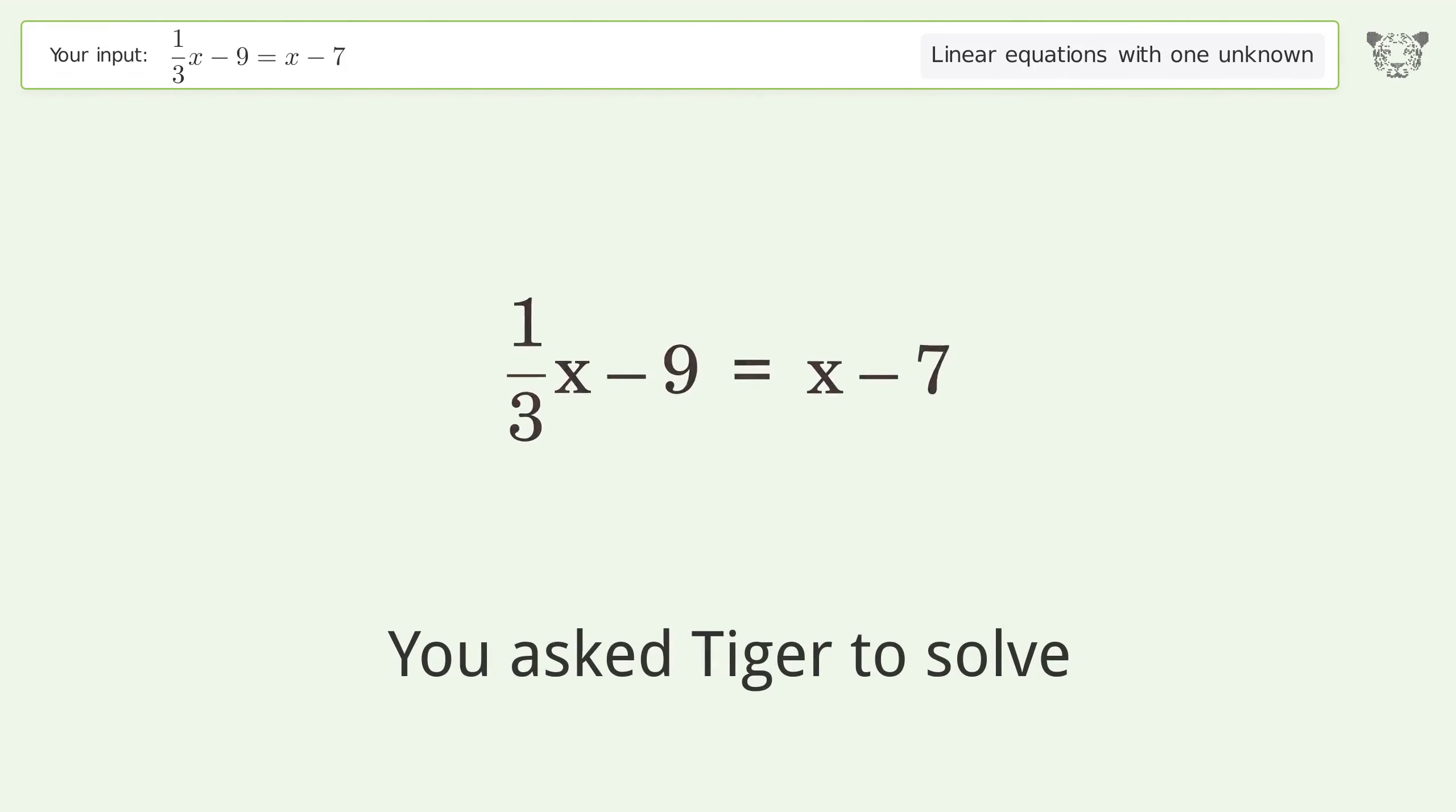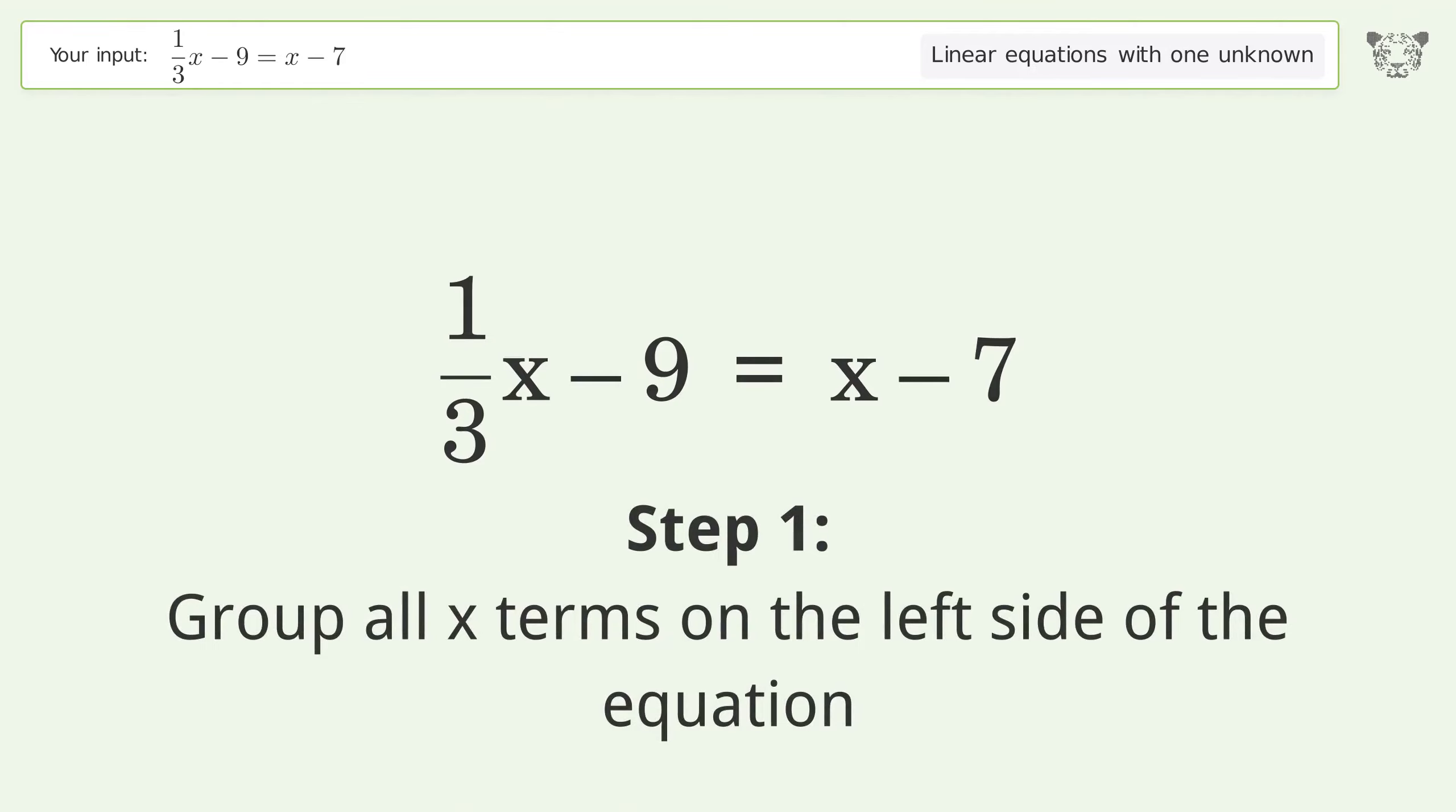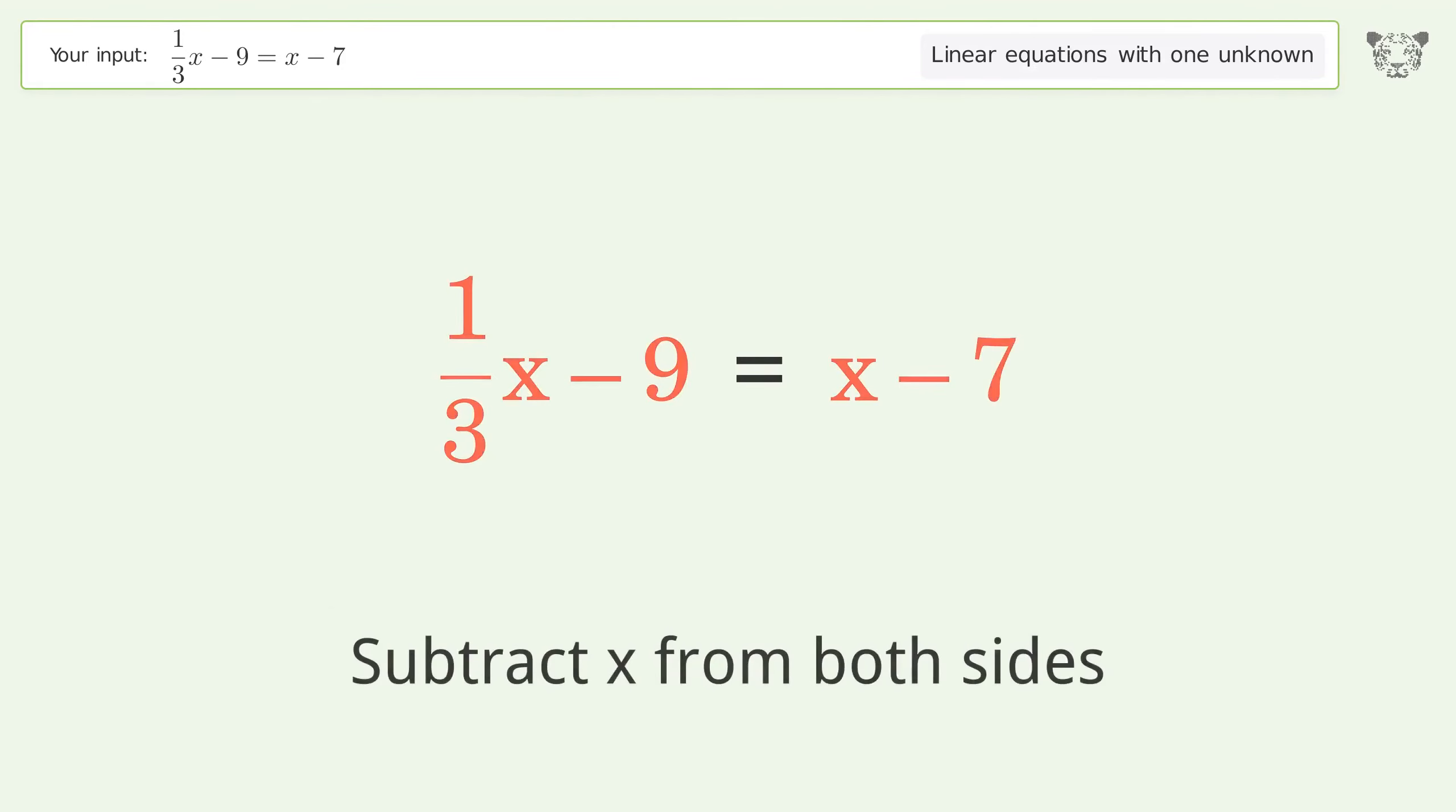You asked Tiger to solve this. It deals with linear equations with one unknown. The final result is x equals negative 3. Let's solve it step by step. Group all x terms on the left side of the equation, subtract x